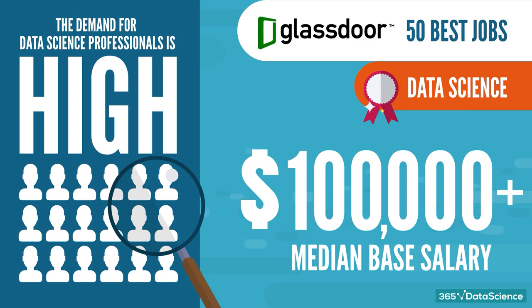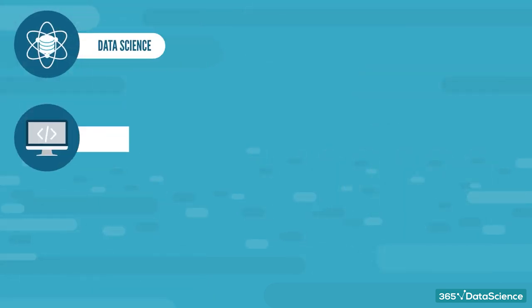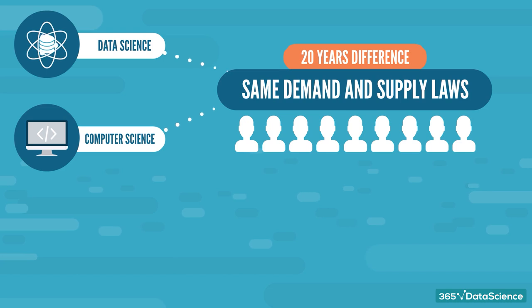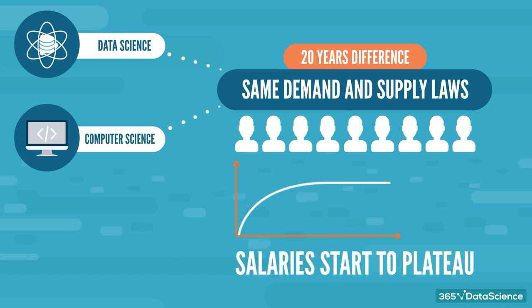Consider this, data science today is very close to how computer science was perceived back in 2005. Actually, DS and CS are very similar in that they are following the same demand and supply laws, but only with a 20-year difference. So you might as well take advantage of that before the market gets overcrowded with highly trained data scientists and salaries start to plateau.